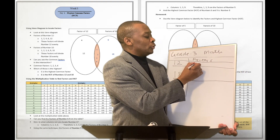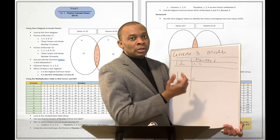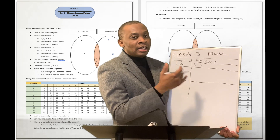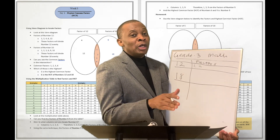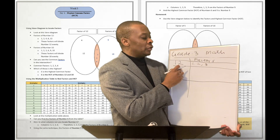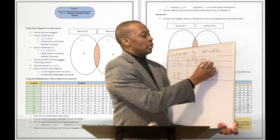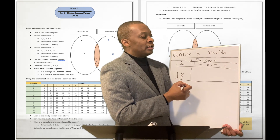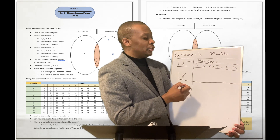What about the number 2? Number 2 is another factor of number 12, because 12 divided by 2 gives you 6 — there is no remainder. What about 3? 3 is another factor of 12 because 12 divided by 3 gives you 4, no remainder. What about 4? 4 is another factor. What about 6? 6 is another factor. And 12 itself is going to be another factor. So the factors of 12 are: 1, 2, 3, 4, 6, and 12.